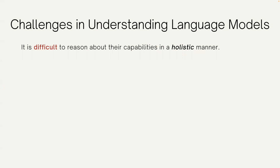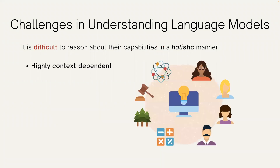However, it is difficult to understand these language model capabilities in a holistic manner for at least two reasons. First, language models have highly context-dependent capabilities. That is, depending on the types of writing, topics, and writers, a model may exhibit a varying degree of performance.